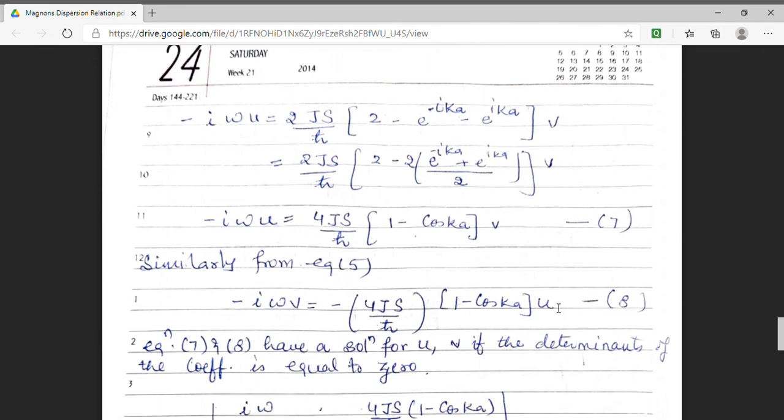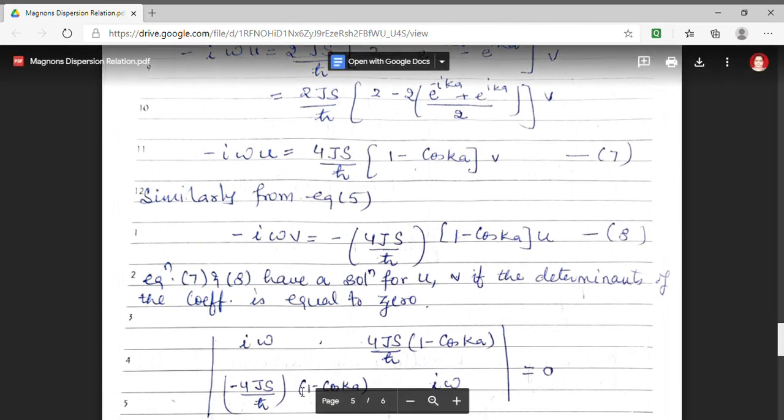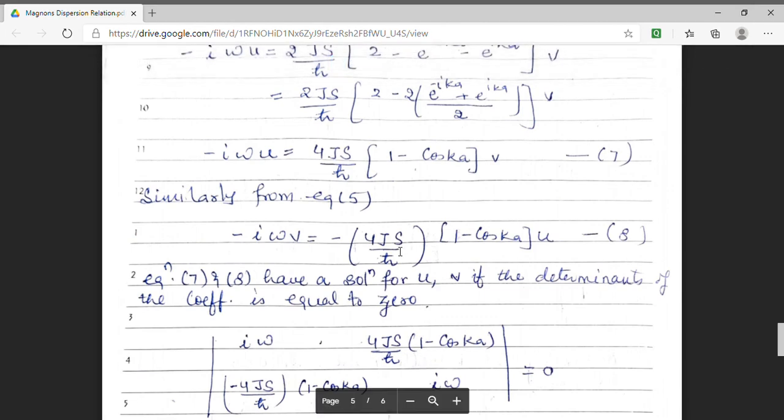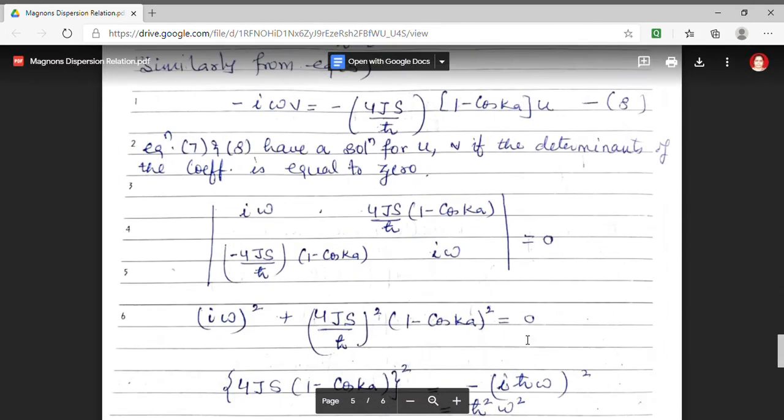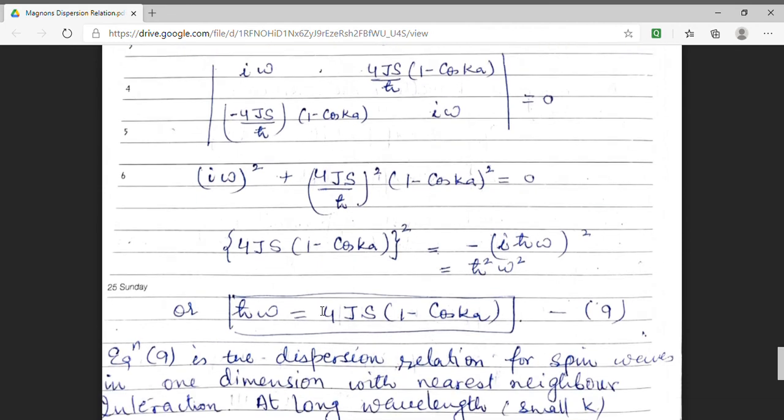Now, in order to solve these expressions, I am finding the solution by forming a determinant. So, this is my determinant. Here, I have written the determinant of coefficient of u and this is the coefficient of v obtained by equation 7. Similarly, the coefficient of u and v obtained by equation 8. And, on cross multiplying, I get my solution of equation to be h cross omega equal to 4js 1 minus cos ka.